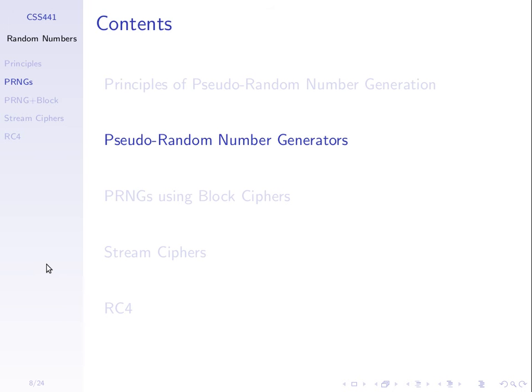We need random numbers for different purposes in security and cryptography — for generating keys, we often initialize algorithms with some initial random value. An important thing is that the attacker shouldn't be able to guess the value we're using. So choosing a random value is important, but our computer is deterministic. It follows some algorithm, so we need that algorithm to be such that it's very hard for the attacker to guess what our random number will be, even though it does follow some algorithm.